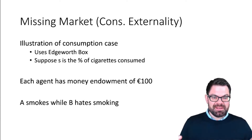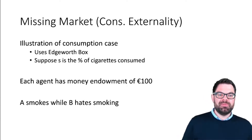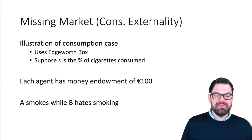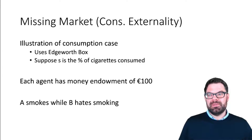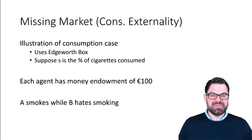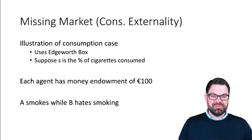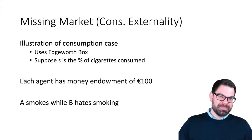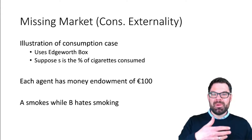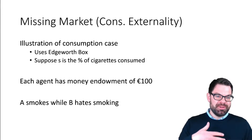Each agent has a money endowment of €100, and this endowment will matter a good bit, because what depends on it is how much person A will smoke. The private solution will then be that either A pays B for the right to smoke, or B pays A for the right to clean air.